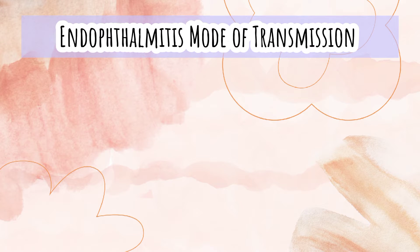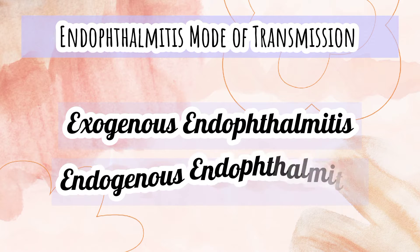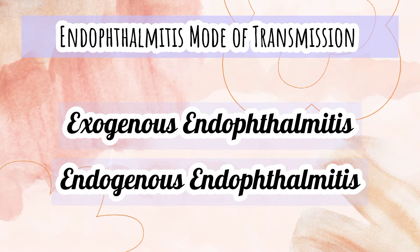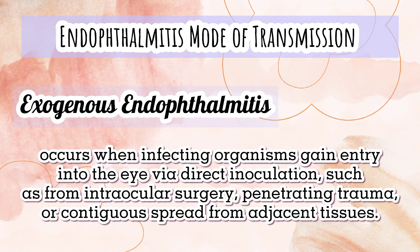Based on the transmission route of the infection, endophthalmitis can be classified as exogenous or endogenous. Exogenous endophthalmitis occurs when infecting organisms gain entry to the eye via direct inoculation, such as from intraocular surgery, penetrating trauma, or contiguous spread from adjacent tissues.